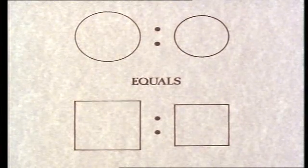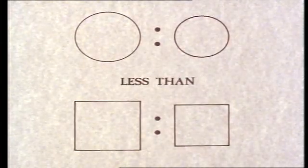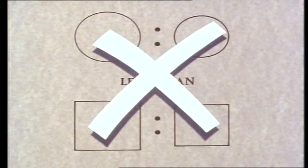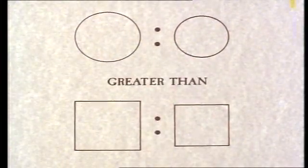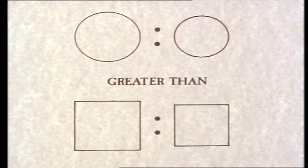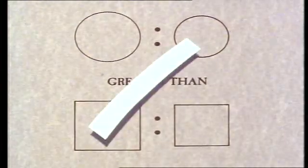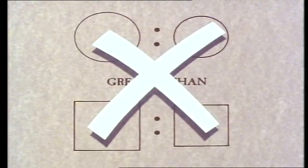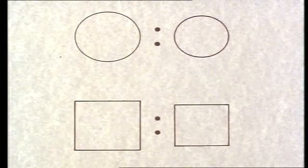The proof uses the method of reductio ad absurdum, and has the following form. We assume first that one ratio is less than the other, and then show that this leads to a contradiction. Then we assume the inequality the other way round, and show this leads to a contradiction also. Having thus exhausted these two possibilities, there is only one conclusion left: the ratios must be equal.